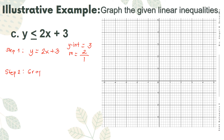Step 2: graph. Start with the y-intercept, which is positive 3. Our rise is 2 and our run is 1, so move 2 units upward and 1 unit to the right to get the second point. Then connect the points.